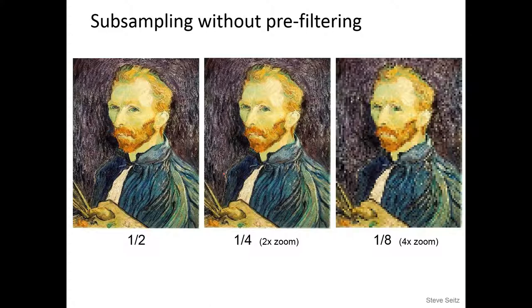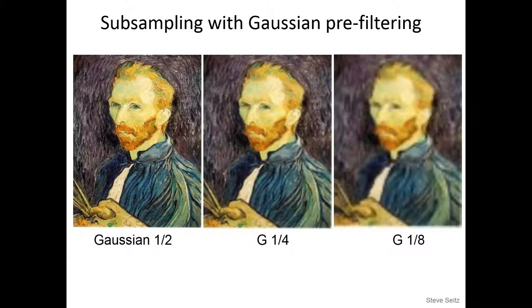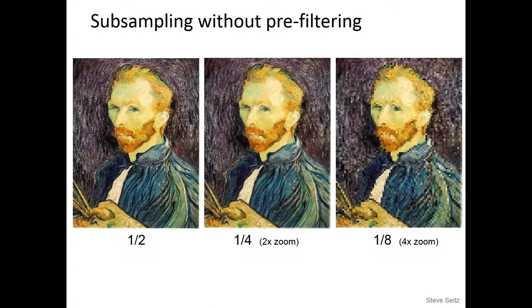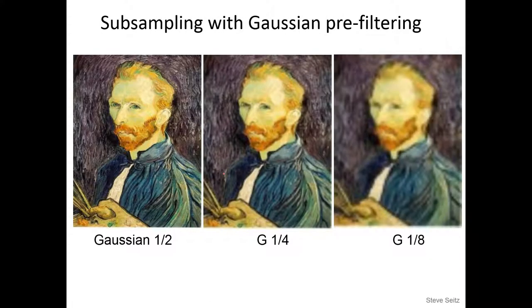Here's another example showing downsampling with and without pre-filtering. Without the low-pass pre-filter, you get all these blocky artifacts. With the pre-filter, it looks better, though if the filter isn't set nicely, it still doesn't look great.